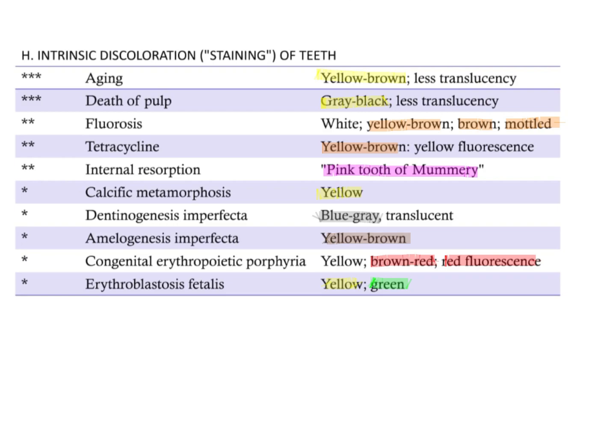Now, what is porphyria? Porphyria is also known as Gunther's disease. It is an autosomal recessive disorder of porphyrin metabolism, which causes an increase in the synthesis and excretion of porphyrins.